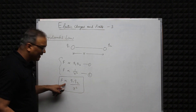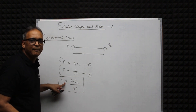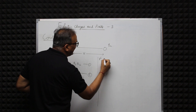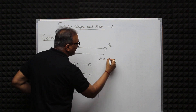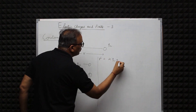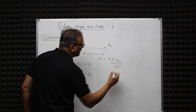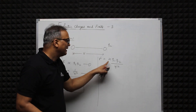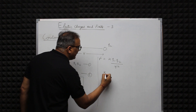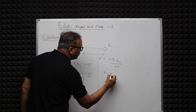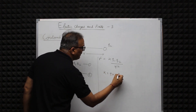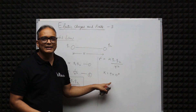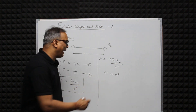Replacing the proportionality sign with an equality sign, we get F = k·q1·q2 / r². Here k is the constant of proportionality, and its value is equal to 9 × 10⁹.